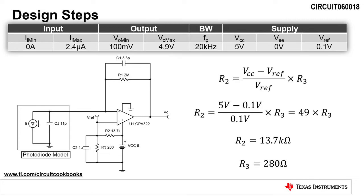The next step is to calculate the voltage divider resistors that provide a 100 millivolt reference voltage given a supply of 5 volts. Rearranging a standard voltage divider equation shows us that R2 must be 49 times larger than R3. By selecting R3 as 280 ohms, we calculate R2 as 13.7 kiloohms.